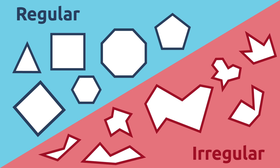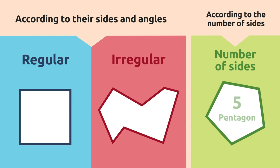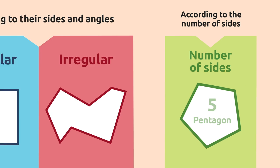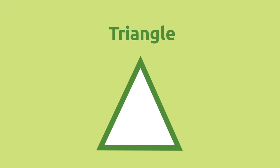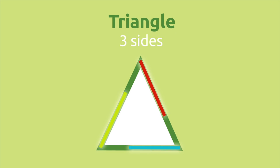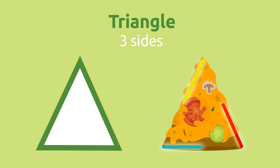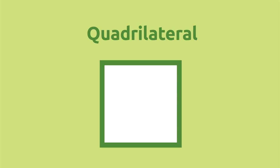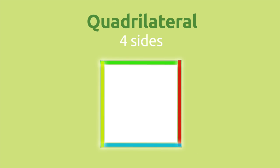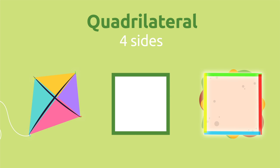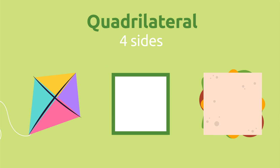Polygons can also be classified depending on the number of their sides. Triangles are those polygons that have three sides — this slice of pizza has a triangular shape. Quadrilaterals have four sides — this sandwich or this kite are quadrilaterals.